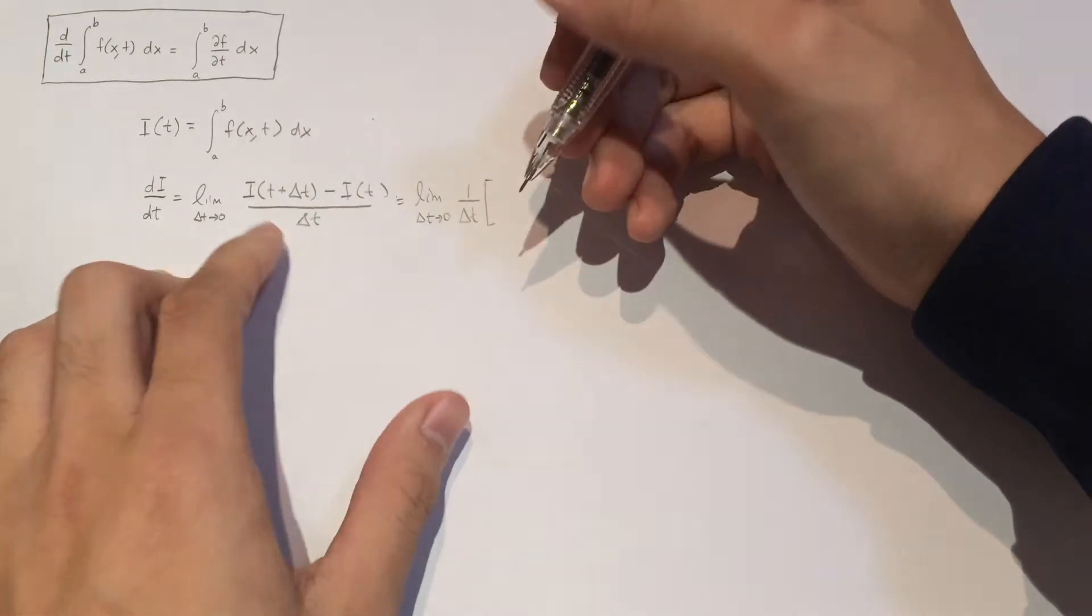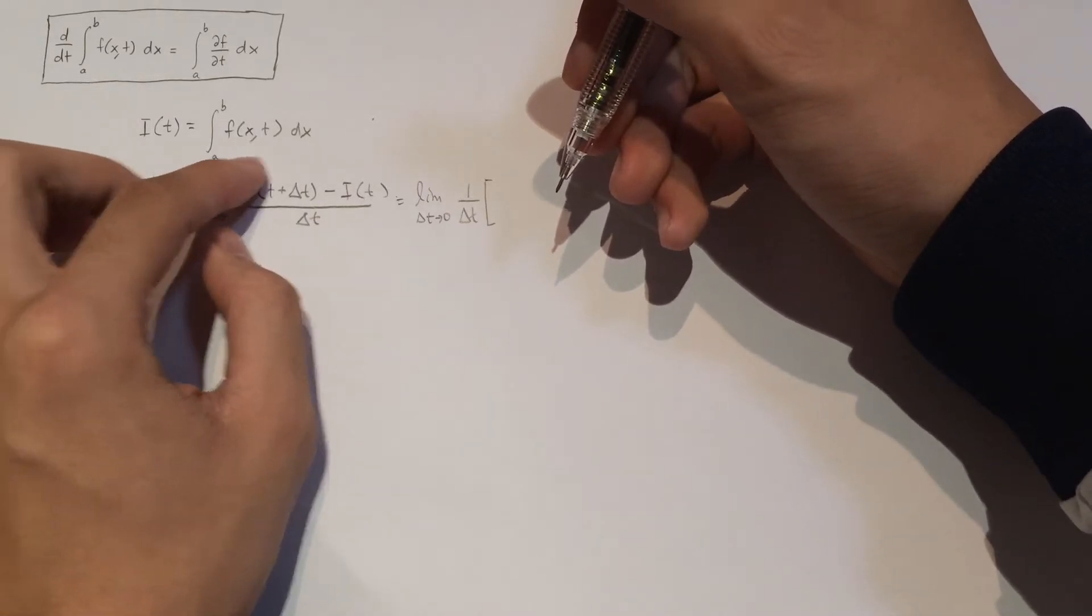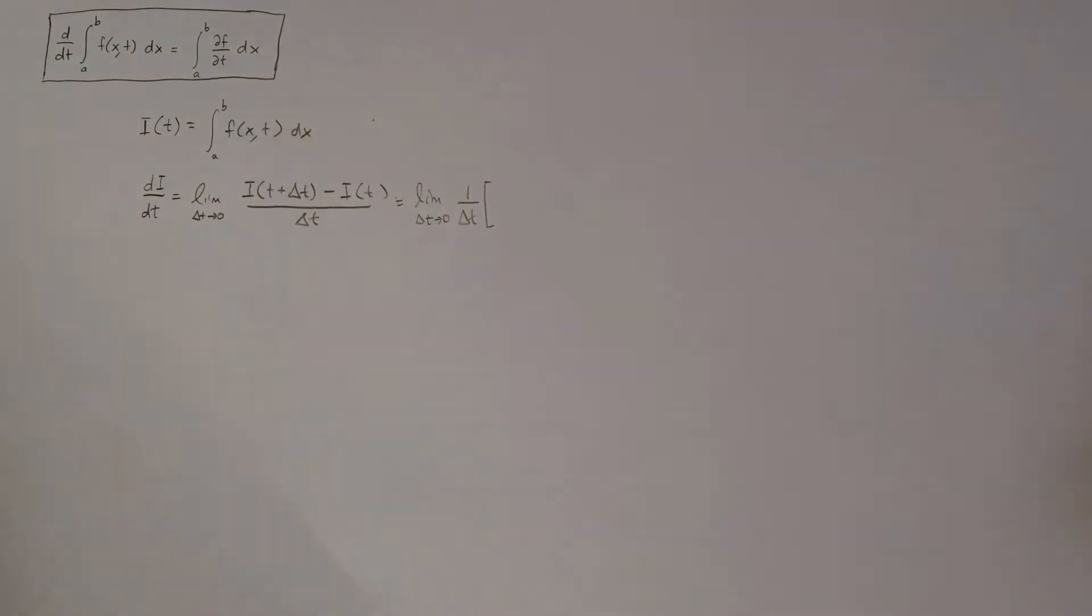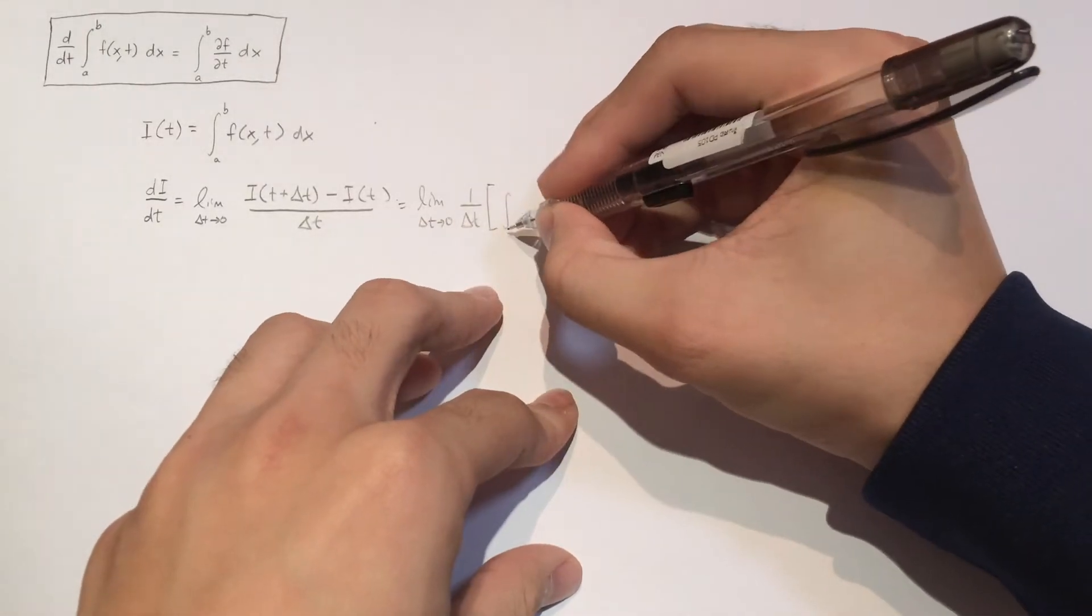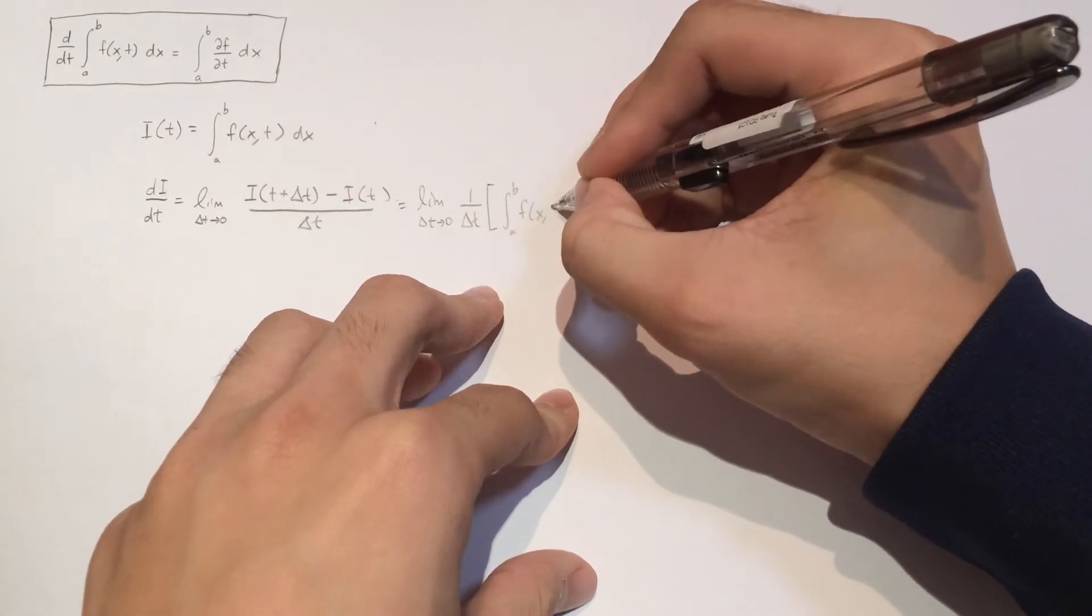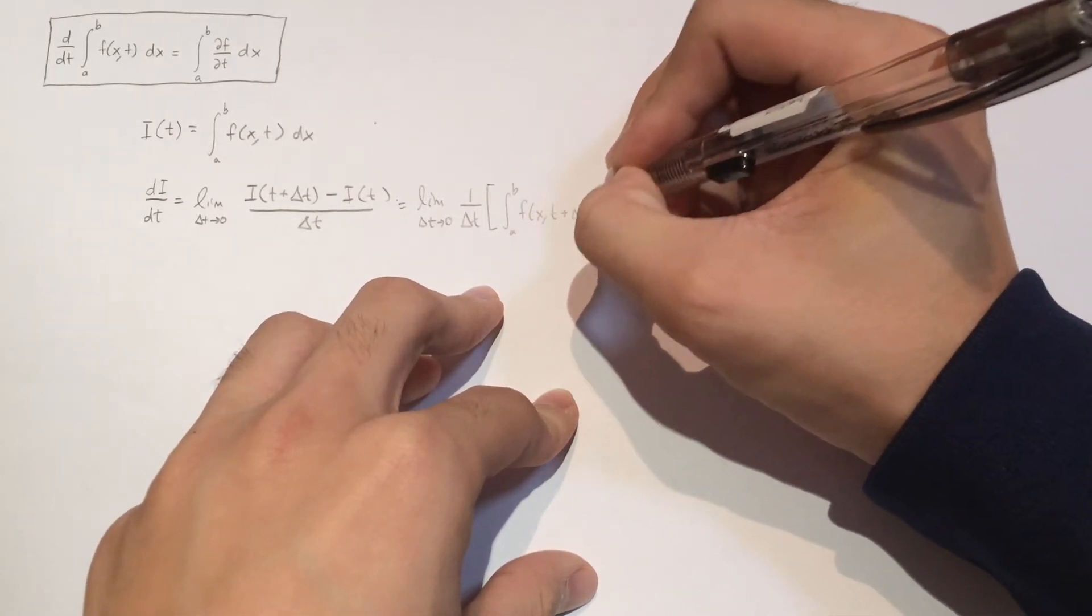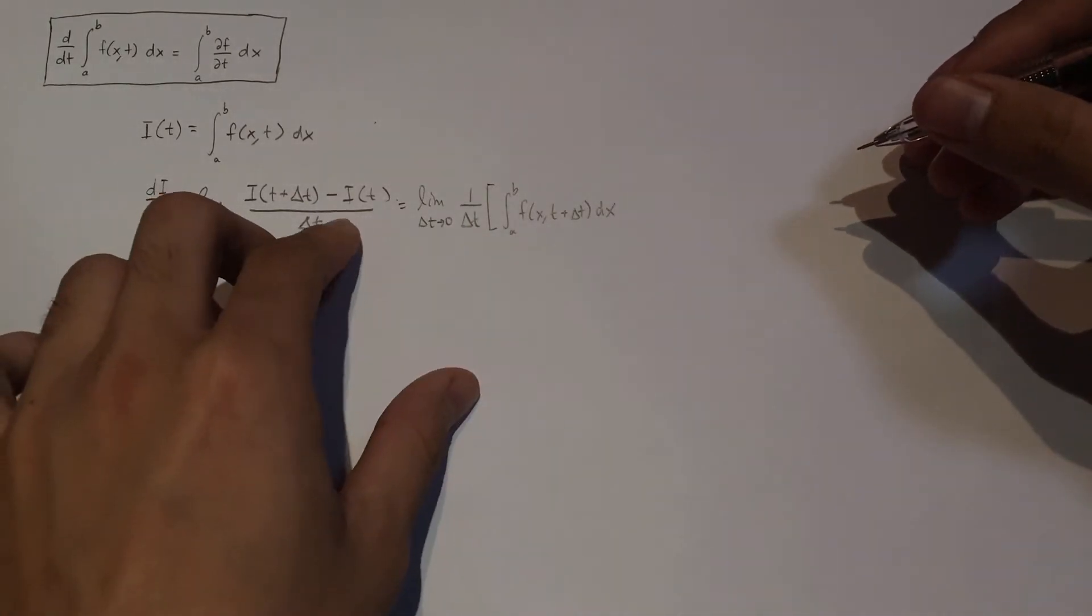So what's I of T plus delta T? Well, it's just this integral, right? So rather than having T, we just replace it with delta T. It's simple enough. So this would just be A to B of F, X, T plus delta T, DX, right?